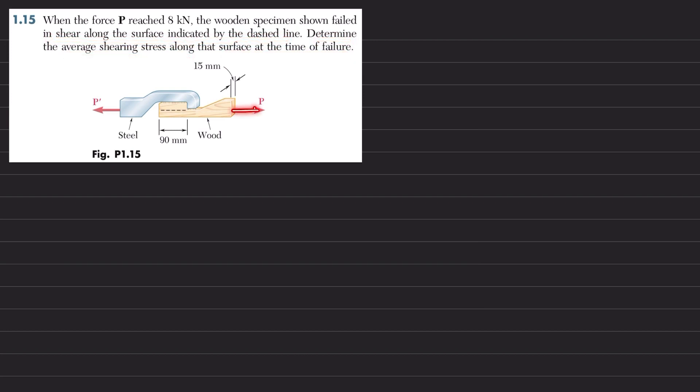You can see this is the load P that is applied, a tensile load of 8 kN, and it is given that due to this load the wooden specimen shown failed on this dashed line.